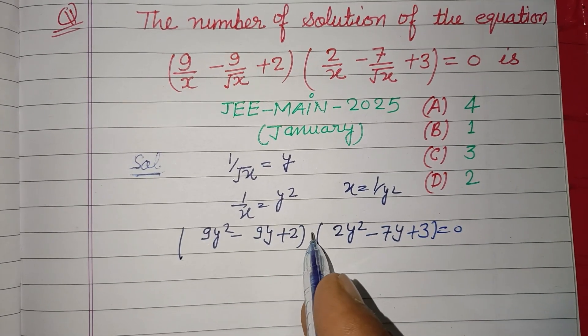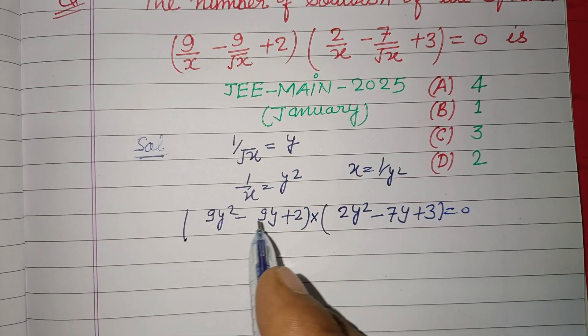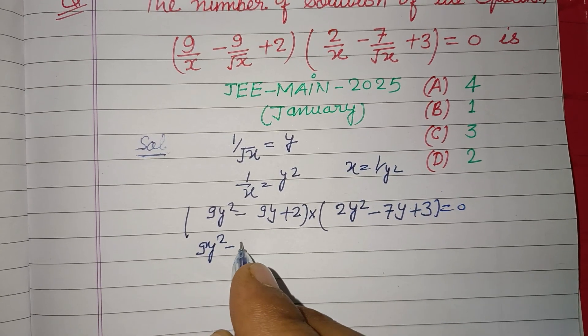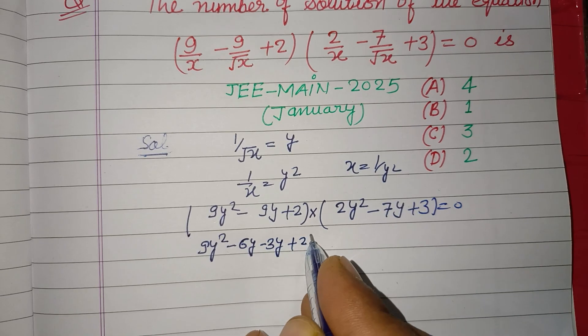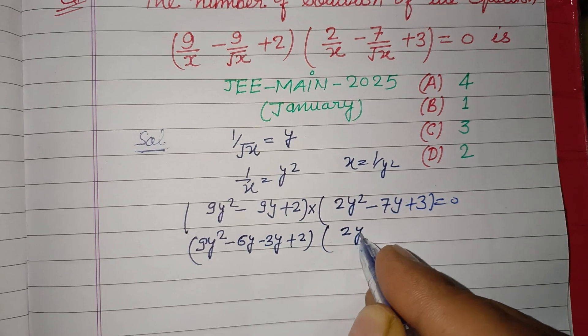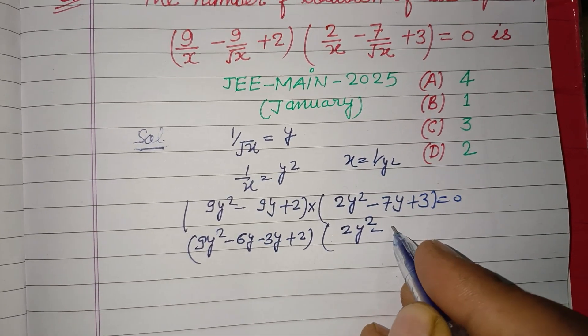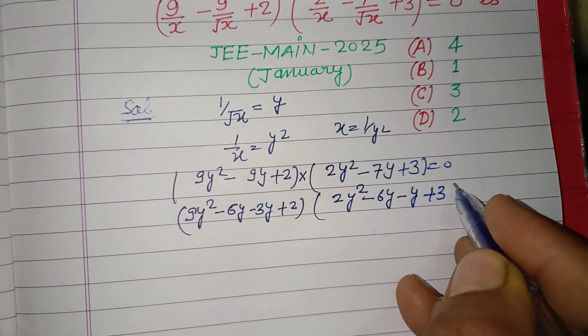9 times 2 is 18, so 6, 3. Therefore 9y² - 6y - 3y + 2. And this is 2 times 3 is 6, so 6 when adjusted becomes 7. So 2y² - 6y - y + 3.